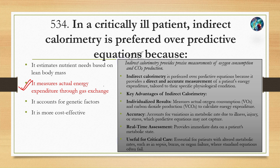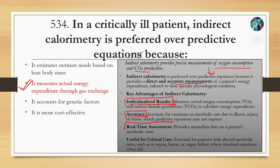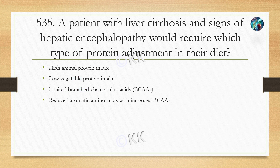Through indirect calorimetry, it provides precise measurement of oxygen consumption and carbon dioxide production. It is preferred over predictive equations because it provides direct and accurate measurements of a patient's energy expenditure tailored to their specific physiological condition. Key advantages include individualization of results, enhanced accuracy, real-time measurements, and usefulness in critical care.